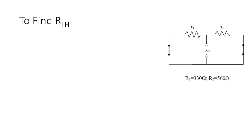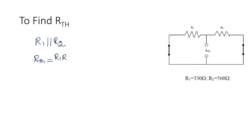The first step is to find R-Thevenin. In the circuit, the voltage source is short-circuited, and if there is any current source, it should be open-circuited. Since we have two voltage sources, both are short-circuited and we are left with R1 and R2. R1 is connected in parallel with R2. Therefore, R-Thevenin can be found by R1 times R2 divided by R1 plus R2.